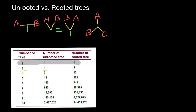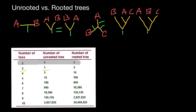Now let's find how we get three rooted phylogenetic trees with three taxa. Imagine we can put a root here — we are going to get the following phylogenetic relationships: B taxa here and A and C here. Second variant: if we put a root here, we get A here and B and C here. The third variant would be if we put a root here — root goes here, and our phylogenetic relationship gives us C here and A and B here.